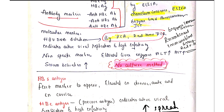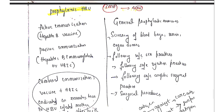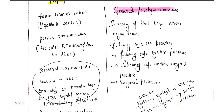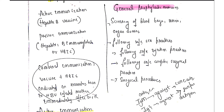Moving on to prophylactic measures: before directly discussing vaccines, general prophylaxis includes screening of blood before transfusion and semen screening. Since the virus spreads through sexual contact, intravenous drug use, and childbirth, we should follow safe sex practices, safe injection practices to prevent needle-stick injuries, and aseptic surgical practices.